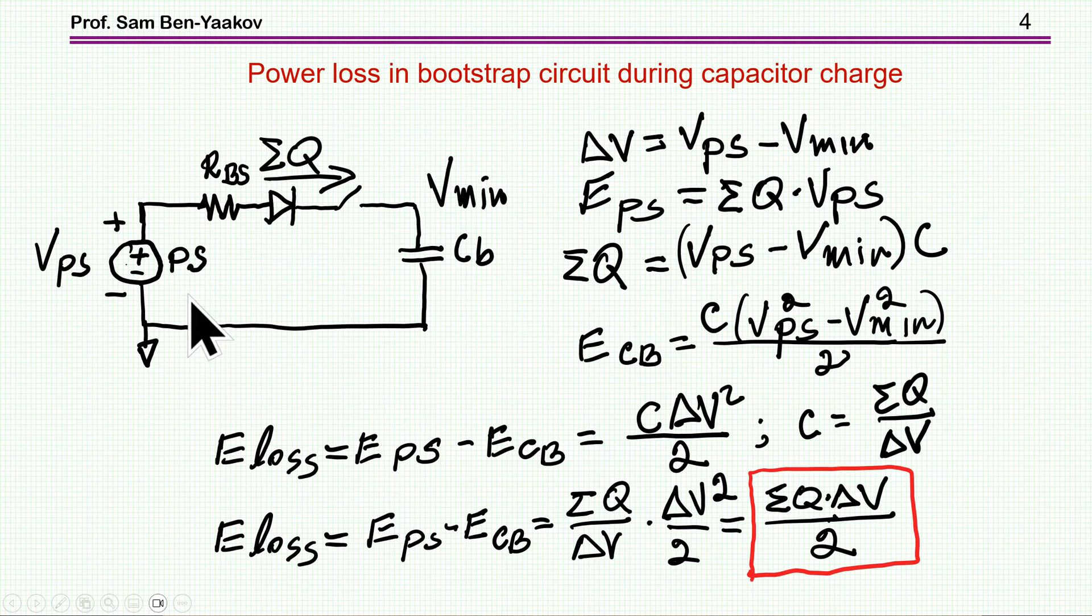What is then the power loss during this process of charging this capacitor from this source? Here is the generic representation of the case. We have a source, we have some resistor for limiting the peak current, we have a diode, and then we have this capacitor. I'm assuming that this voltage is V_PS, and the initial condition is that the capacitor is charged to some V_minimum.